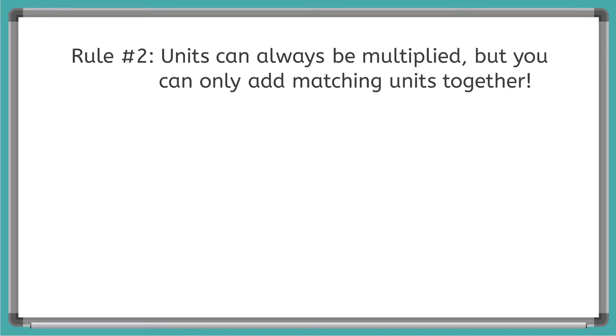Rule number two, units can always be multiplied or divided, but you can only add matching units together. So this is really important. Remembering what we just did was v equals d over t. And so what we did is we divided meters over second. That's what that gave us, and that gave us velocity. And that's perfectly fine. That is okay. But what we can't do,